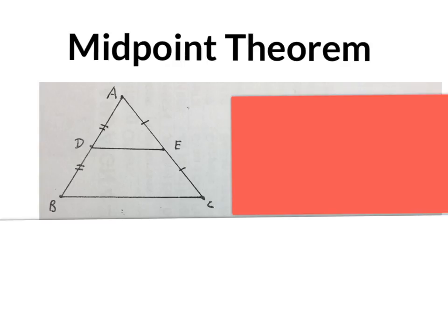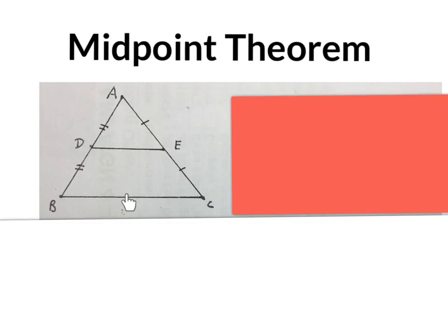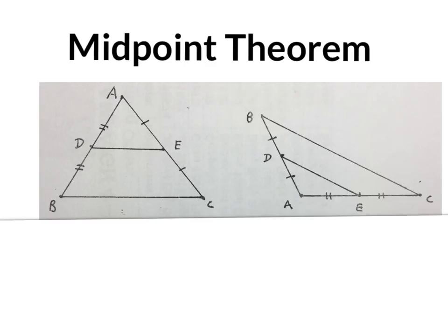Looking at a sketch, the midpoint theorem works on a triangle. If you get the midpoint of one side of the triangle and the midpoint of a second side of the triangle and you connect the midpoints, that line will be parallel to the third side and that line will be half the length of the third side. It doesn't matter what shape triangle you use — the rule stays the same.